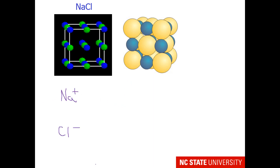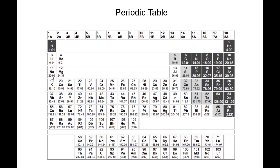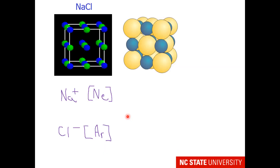It might help to look at the electron configurations for sodium 1+ and chloride 1−. Sodium 1+ must be isoelectronic with neon, and chloride 1− must be isoelectronic with argon. In general, we would expect neon to be smaller than argon — and especially so because this would be neon with a +1 charge, which would tend to make it smaller, and argon with a negative charge, which would tend to make it larger than a typical argon.